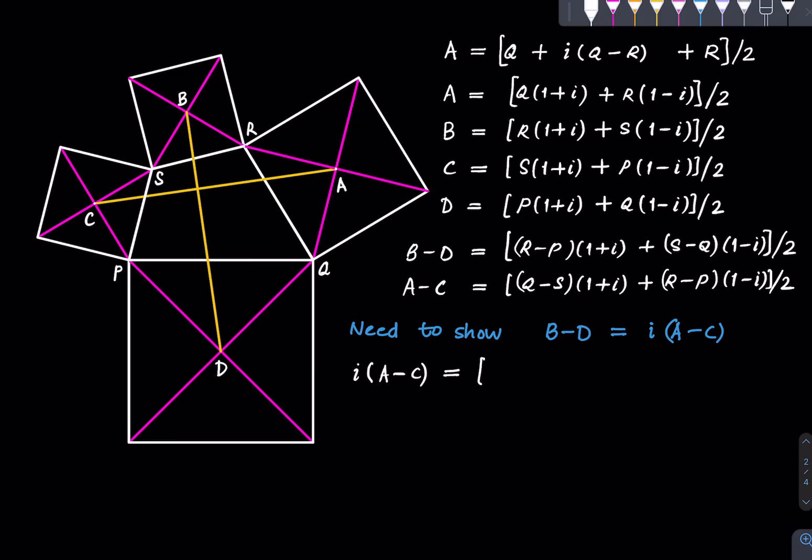So i times (A minus C) is what? It is i times (Q minus S) times (1 plus i) plus (R minus P) times i times (1 minus i) divided by 2. All we did was we just multiplied this by i. And what is this? This is 1 plus i, and multiplying i with that is 1 minus i, or no, that is i minus 1.